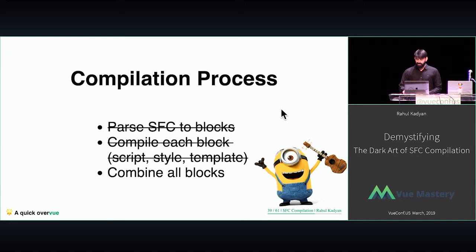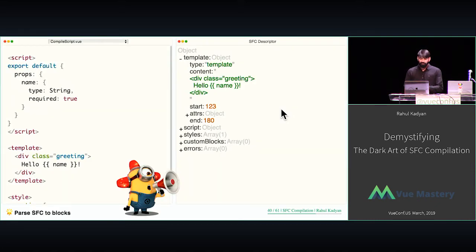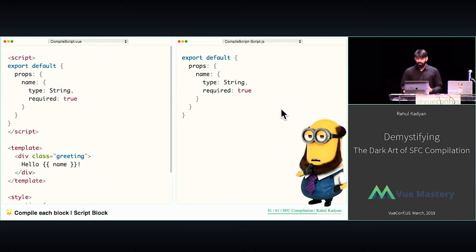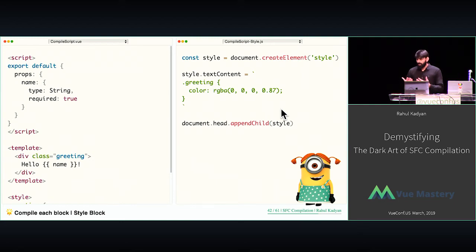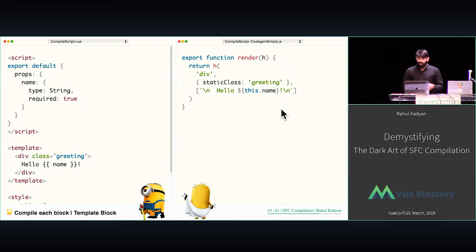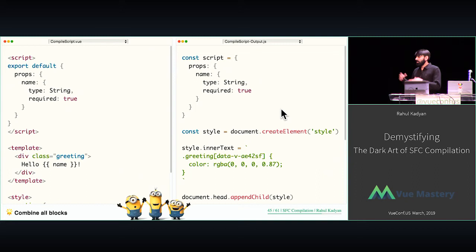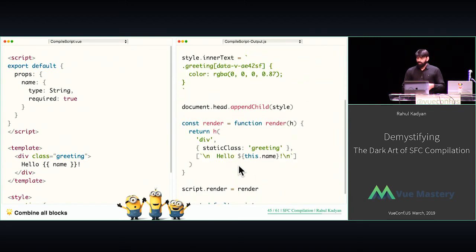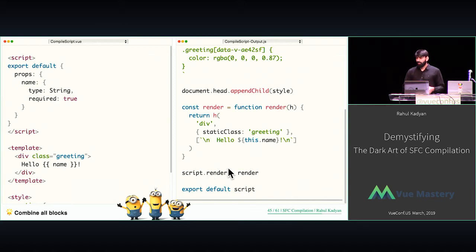All we have to do is combine them all together into one JavaScript file. So let's revise: we started with parsing the SFC into blocks, then compiled the script — which was just copy-pasting it to a JavaScript file. Then we compiled the style — creating a style element at runtime, putting content in it, and appending it to the document head. Then we compiled the template into a render function. Now we take the script, create a variable, copy-paste the style compilation code, take the render function, and add it to the script. Every Vue file exports this script which has the render function and style injection code.